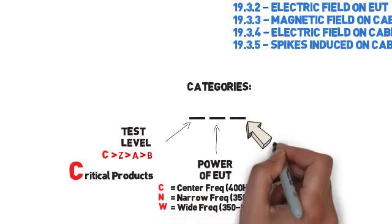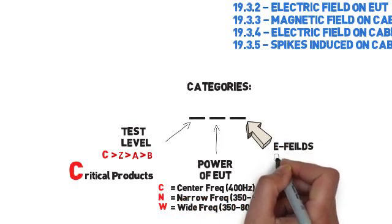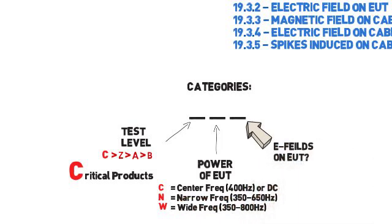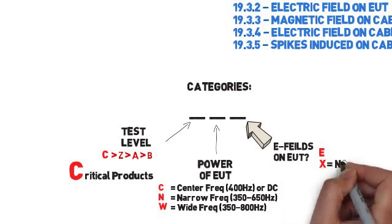The third letter determines whether E-fields will be run on the EUT. This is denoted with E or X. X means it's not run, E means it will be run.